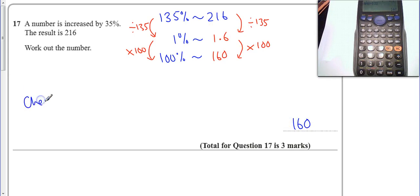Now if you want to check, I can just do my 160 times by 1.35, that's a 35% increase. 160 times 1.35, and it comes out as 216, so I know I'm right.